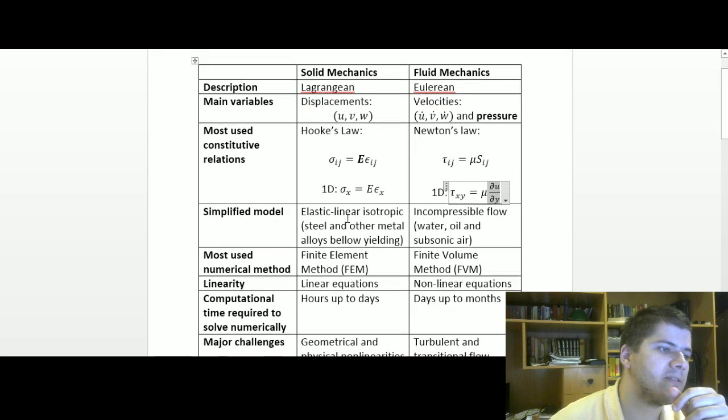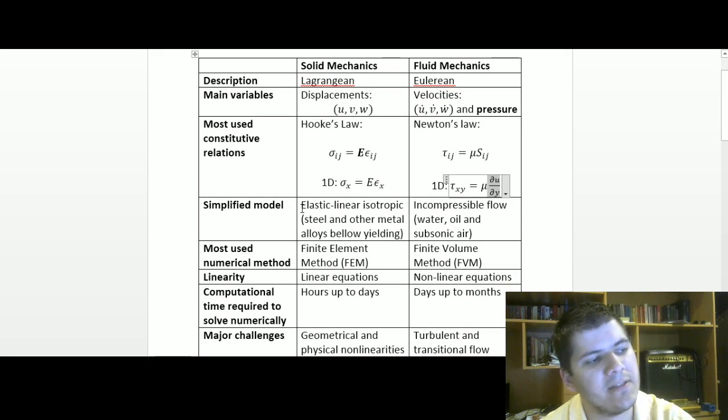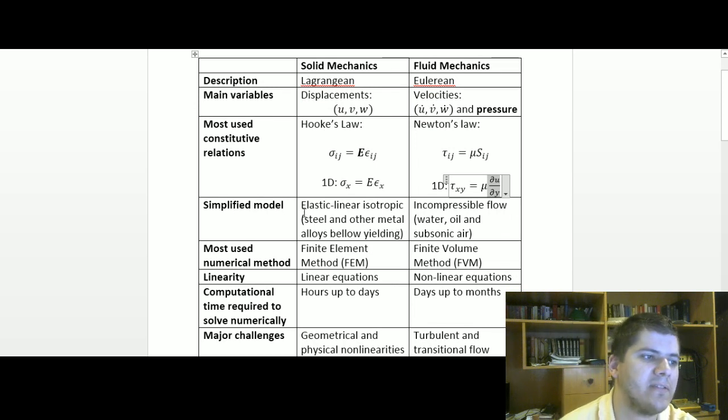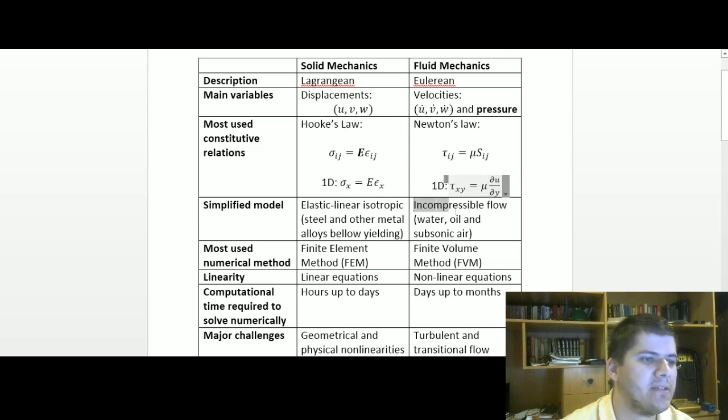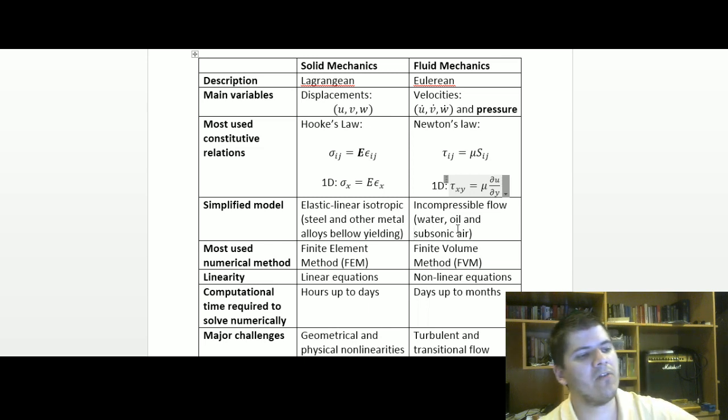Our simplified model in solid mechanics would usually be elastic linear isotropic like steel and other metal alloys like copper and aluminum below the yielding region. In fluid mechanics we have incompressible fluids like water, oil, and air below the subsonic speed.